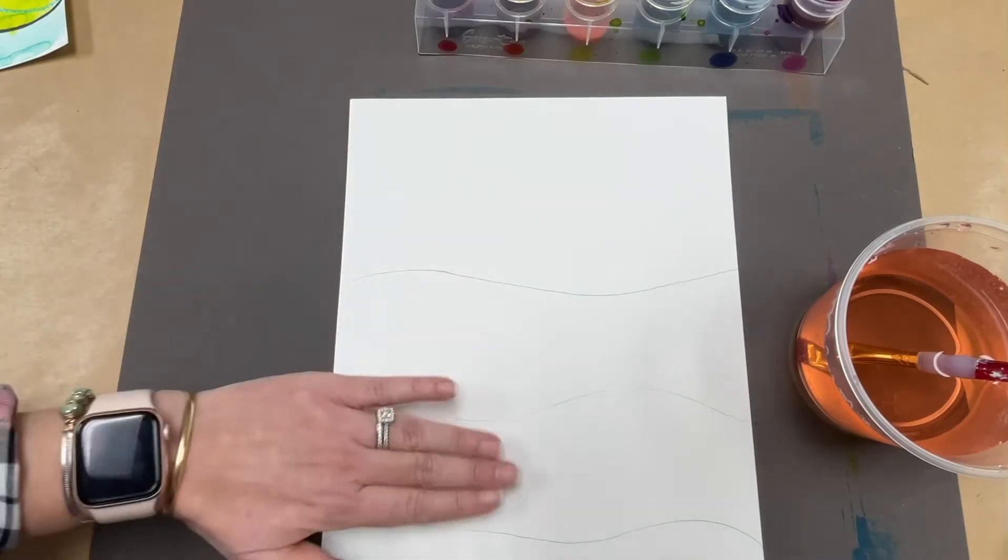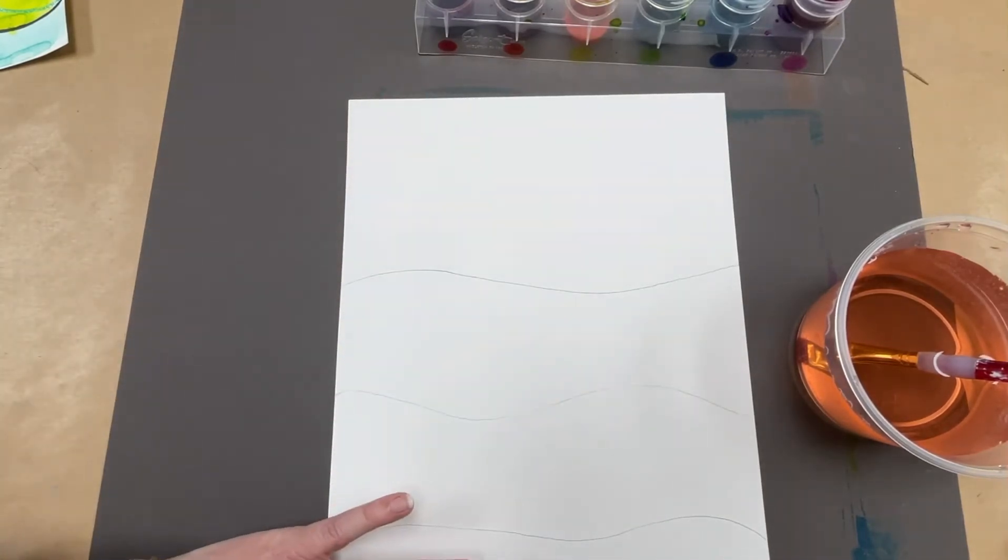So you should have three lines. So that gives us one, two, three, four sections. We're going to do four watercolor techniques.